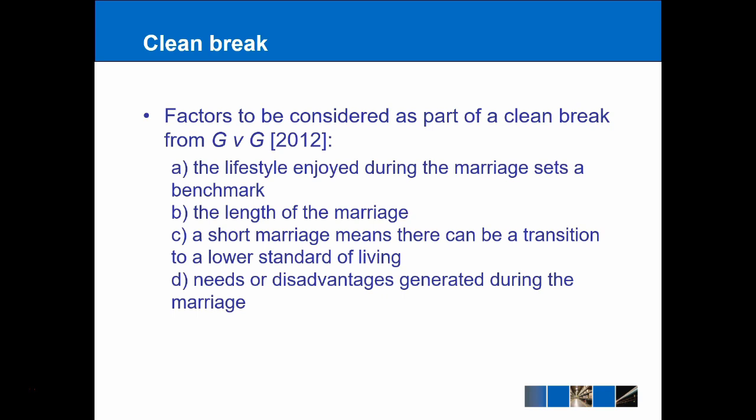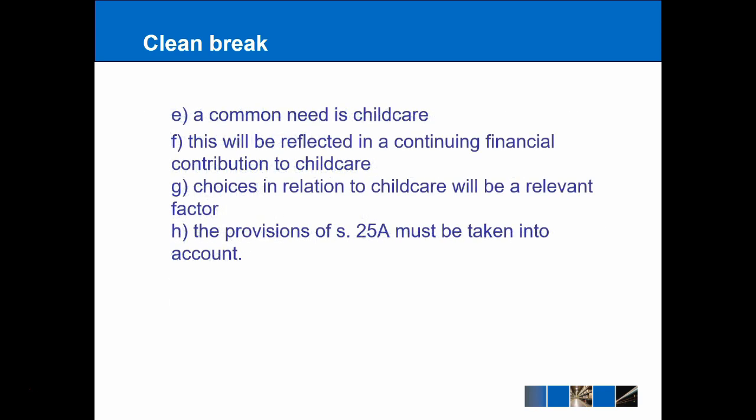The other thing they're really looking into is any needs or disadvantages generated during the marriage. So perhaps one of the parties becomes ill during that time, or the most common need — which is child care — is represented by a continuing financial contribution to child care. So we're going to have maintenance payments in relation to the child themselves. Choices in relation to child care are also going to be a relevant factor, and that kind of draws us full circle because it comes back to the lifestyle enjoyed. For example, if the child is used to quite a privileged upbringing — ski trips, music lessons, private school — that's going to be something that needs to be taken into account by the court when considering those maintenance payments and how long they go on for. So that links generally back to the provisions in Section 25A.